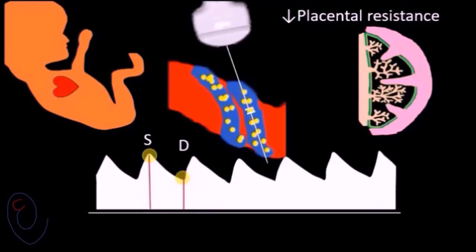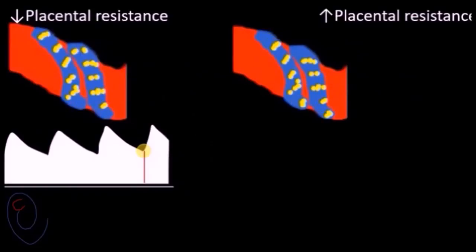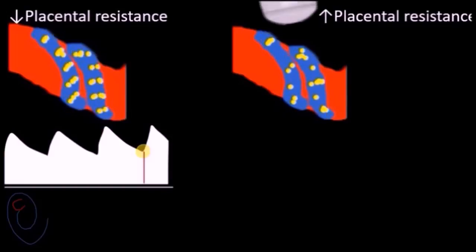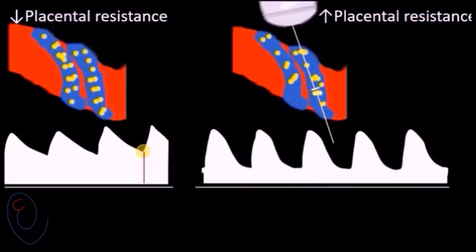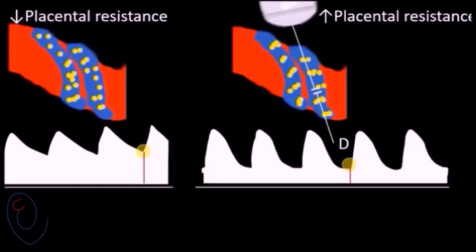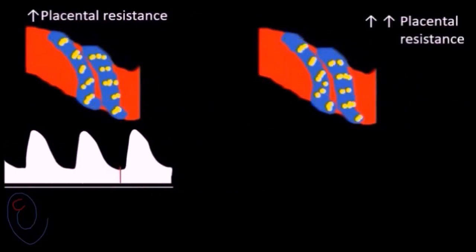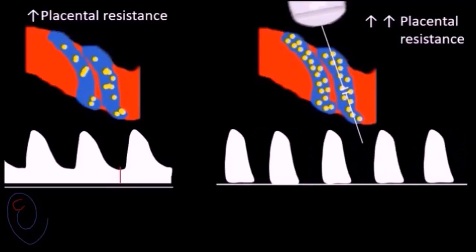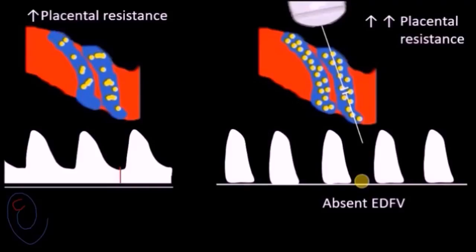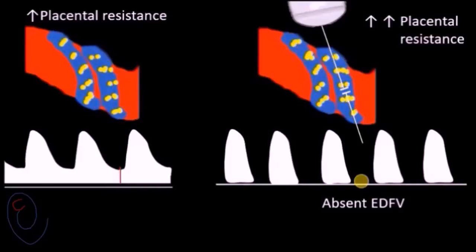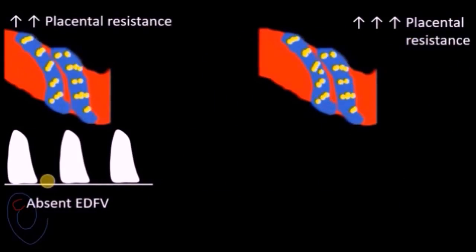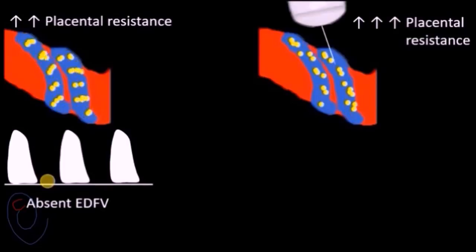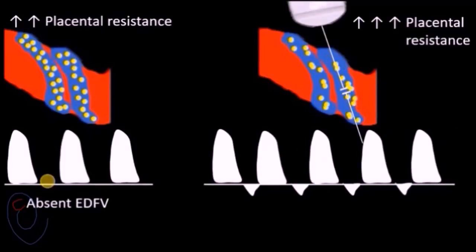Now let's see what happens if the vascular resistance increases inside the placenta. With increasing placental vascular resistance, blood flow will slow down during diastole, and it will present as absent end diastolic velocity. With more and more rise in placental resistance, blood will move back during diastole, and on the graph it will present as reversed end diastolic flow.